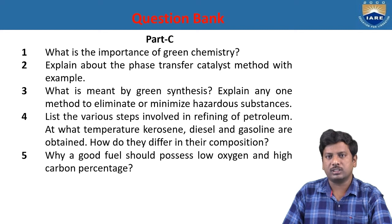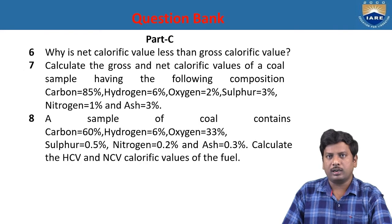Why should a good fuel have low oxygen and high carbon percentage? If it contains higher oxygen, it adversely affects the flame of the fuel. High carbon percentage increases the calorific value, so higher carbon percentage is maintained because it is directly proportional to calorific value. Why is net calorific value always less than gross calorific value? In GCV, combustion products are cooled to room temperature. In LCV, combustion products are allowed to escape — evaporation takes place — so the heat energy released gradually decreases, making LCV less than GCV.